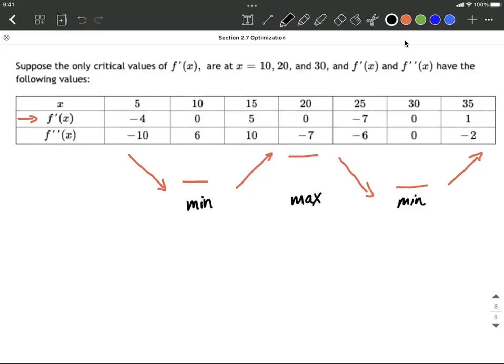Next up, let's think about that second derivative. The second derivative tells us about concavity of the graph. Now, we don't really care about x=5, 15, 25, 35. We more so care about right at these critical numbers.